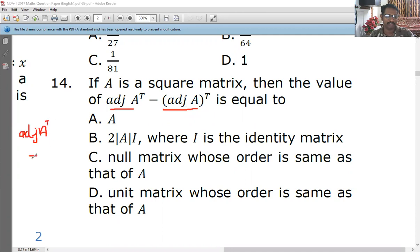From the properties, we know that adjoin of A transpose is already equal to adjoin of A the whole transpose.